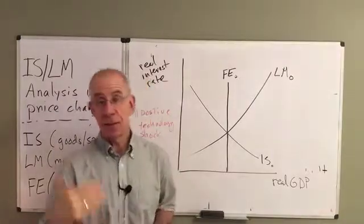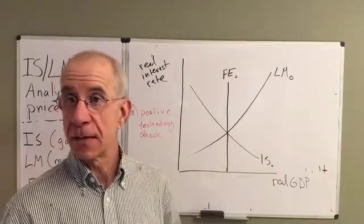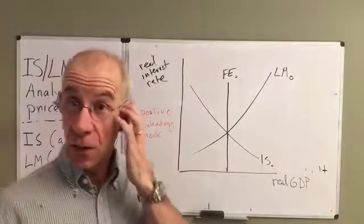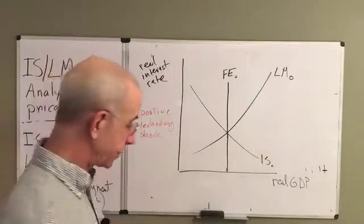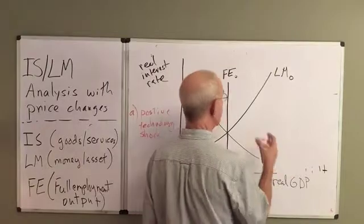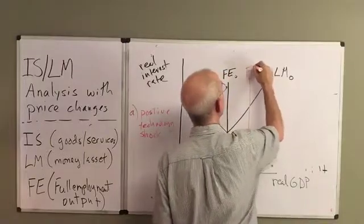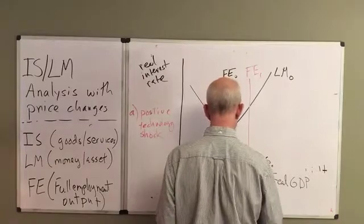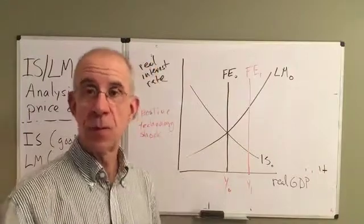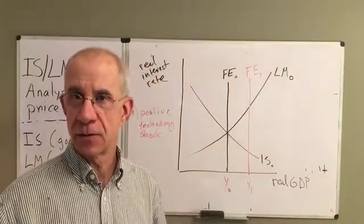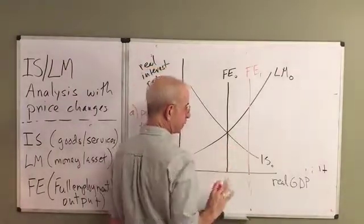What do I mean by that? That would be, for example, the innovation in computer technology or internet technology that makes the economy more productive. If you go back and look at another video, you'll see that this change would result in the full employment level of output increasing — with more productive labor and more productive capital, the economy has a greater capacity to produce goods. So FE shifts to the right.